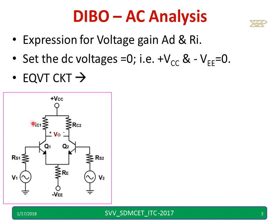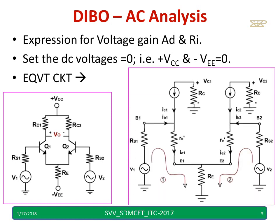In this circuit, I have to make Vcc equal to zero as well as VEE equal to zero. The equivalent circuit after considering the T model we will get like this: this is the collector, this is the emitter, this is the base for Q1. Similarly, for Q2, we have base 2, collector 2, and emitter 2.